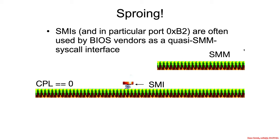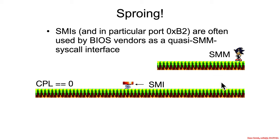SMM, for reasons we'll see later, is a dark world in which you can't see dark sonic working behind the scenes. SMIs are used via port B2 in particular as a sort of syscall-ish type thing, where you're calling into SMM rather than a kernel.